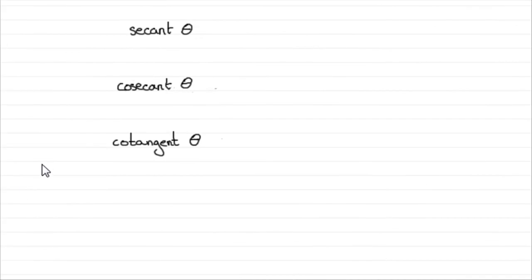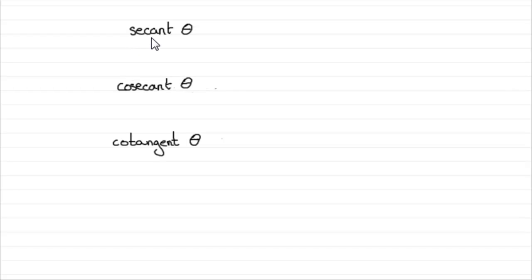Hi, now I want to introduce you to three more trigonometric functions. Suppose we have some angle theta — it could be angle x, it could be anything you like — but if I just said the angle was theta, then the first trig function here is secant theta. Then we've got cosecant theta and cotangent theta.